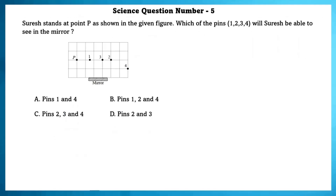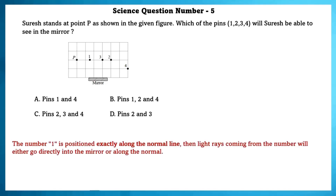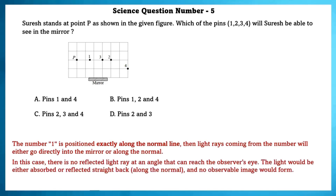Science question number 5. Suresh stands at point P as shown in the figure. Which of the pins 1, 2, 3, 4 will Suresh be able to see in the mirror? Pin number 1 is positioned exactly along the normal line, so rays from it either go directly into the mirror or along the normal. There is no reflected ray at an angle that can reach the observer's eye — the light is either absorbed or reflected straight back along the normal, and no observable image forms. So he cannot see pin 1, but he can see pins 2, 3 and 4.